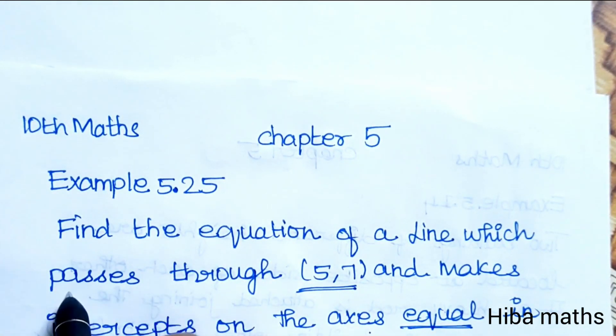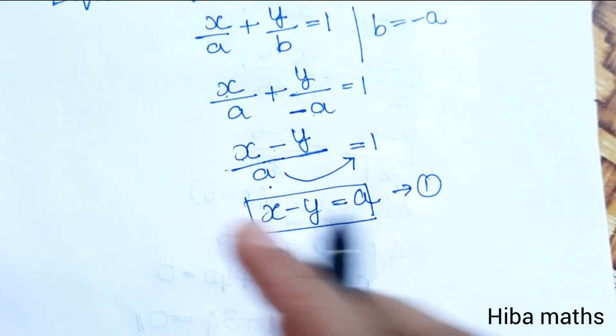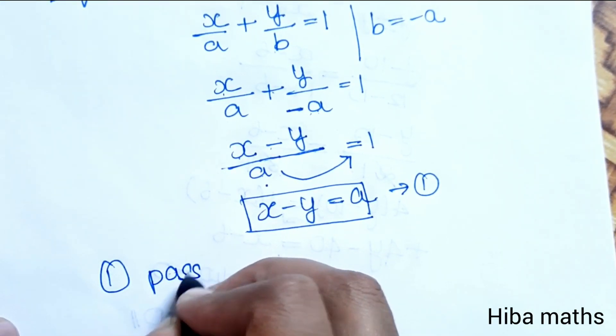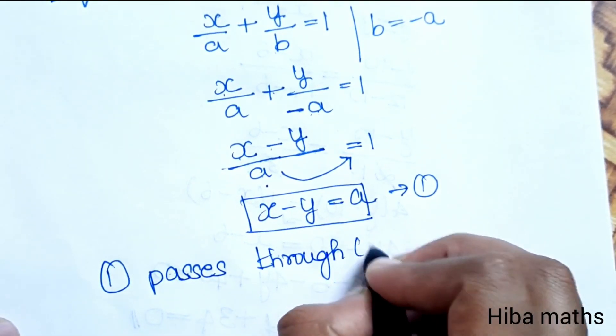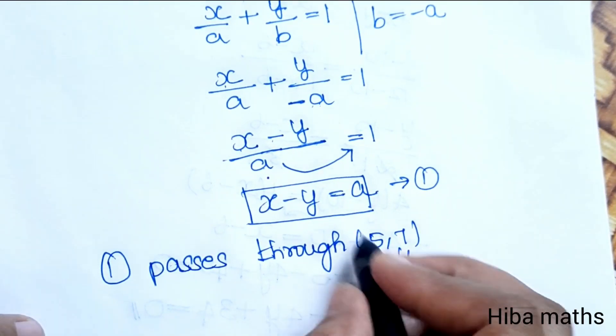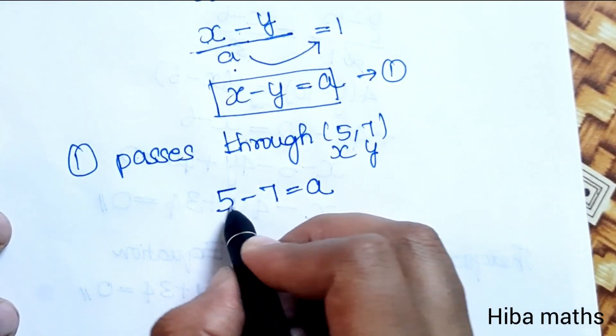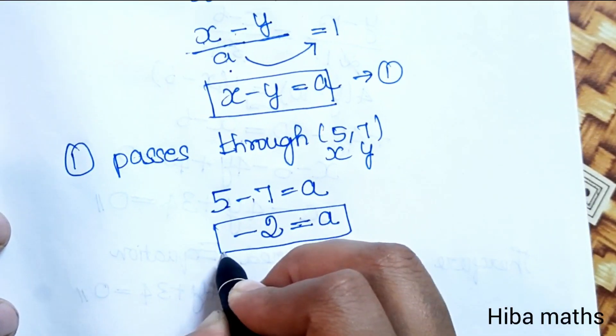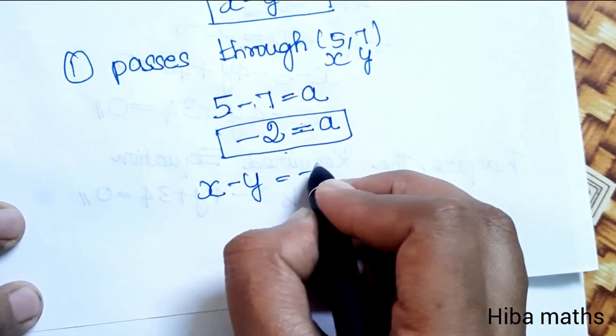The line passes through the point, so we substitute x and y values. Number 1 passes through (5,7), so we substitute 5 and 7 into our equation. This gives us x minus y is equal to minus 2.